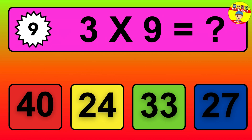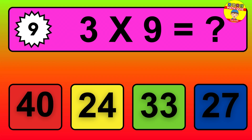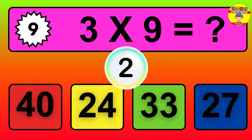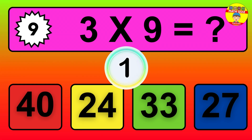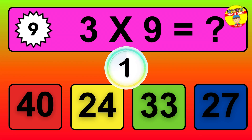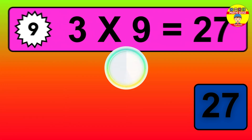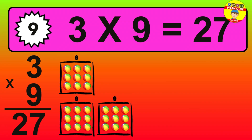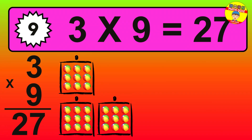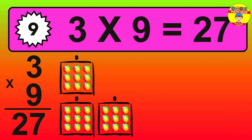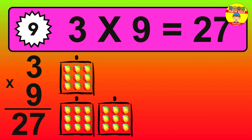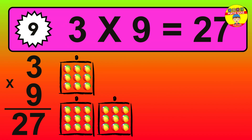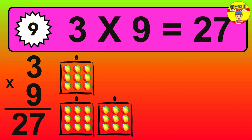Question 9. 3 times 9 equals what? The answer is 3 times 9 is 27. To calculate, we have 3 groups with 9 balls each one. So, how many balls do we have? 27 balls.